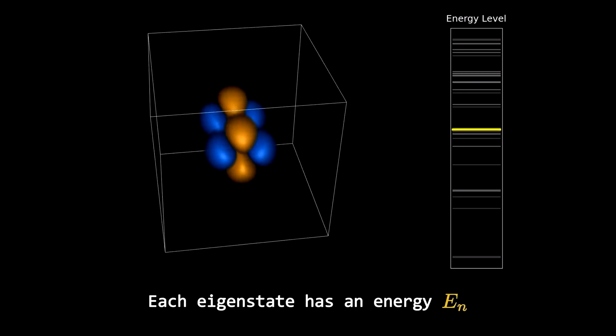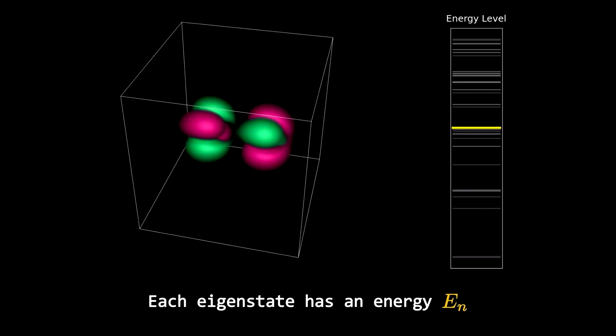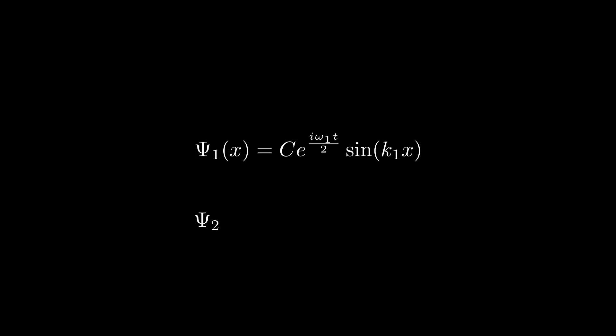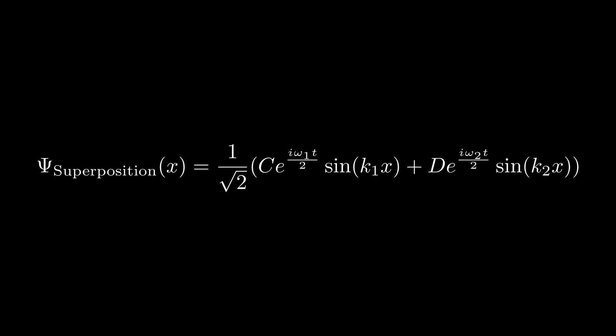While eigenstates are very useful, any function that satisfies the Schrodinger equation of our system is a valid state. For instance, combining two eigenstates through addition remains a valid solution to the equation. This is known as superposition and is a fundamental concept in quantum mechanics.